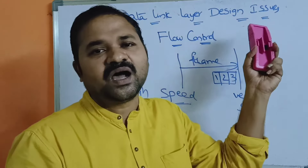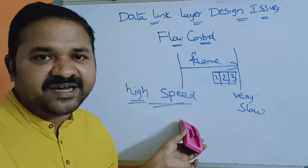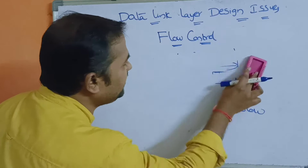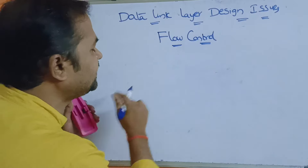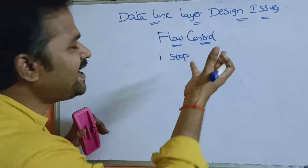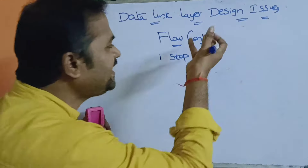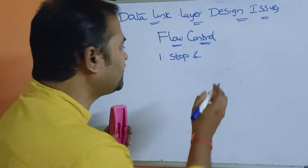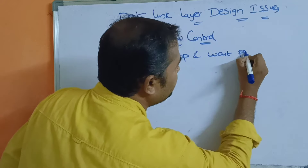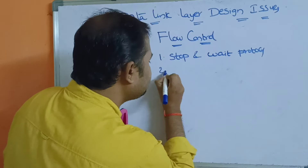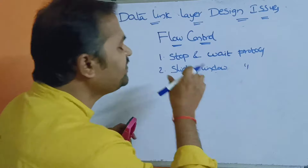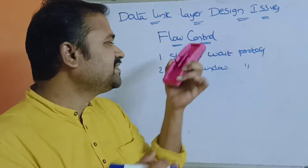This problem is called flow control. We have to maintain the flow between sender and receiver so that the sender speed matches the receiver speed. In order to maintain that flow, we have two types of protocols. The first one is stop and wait protocol, and the second one is sliding window protocol. We mainly use these two protocols in order to handle that flow.